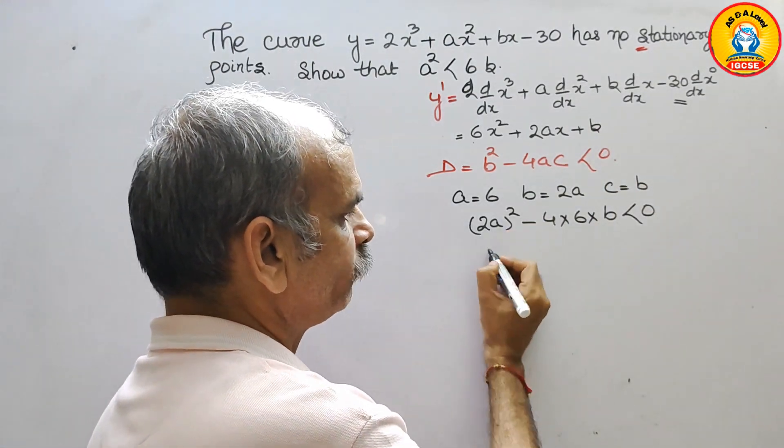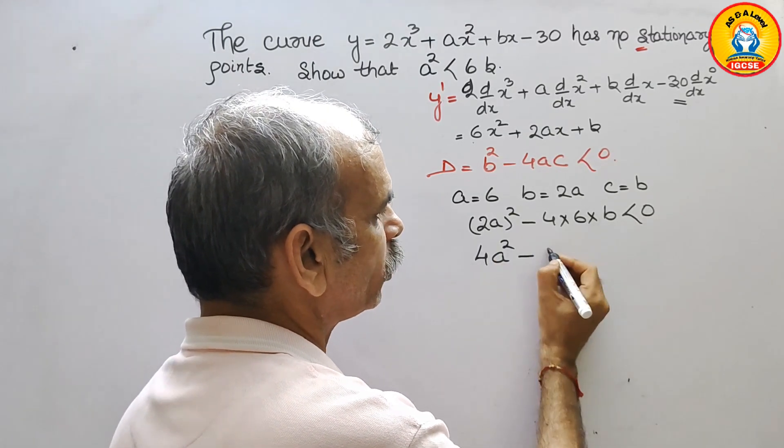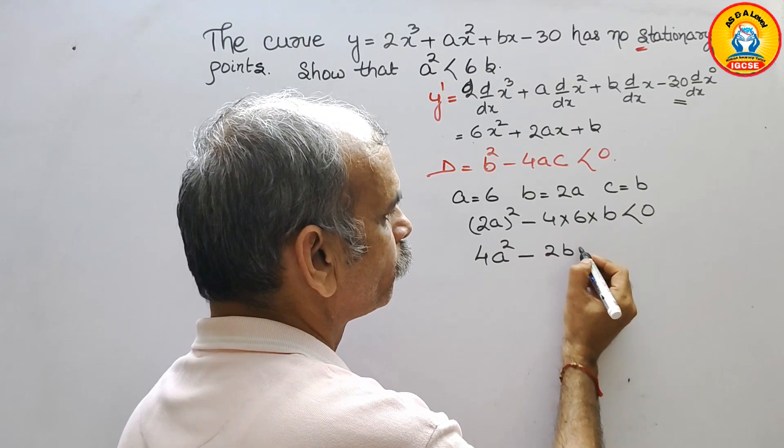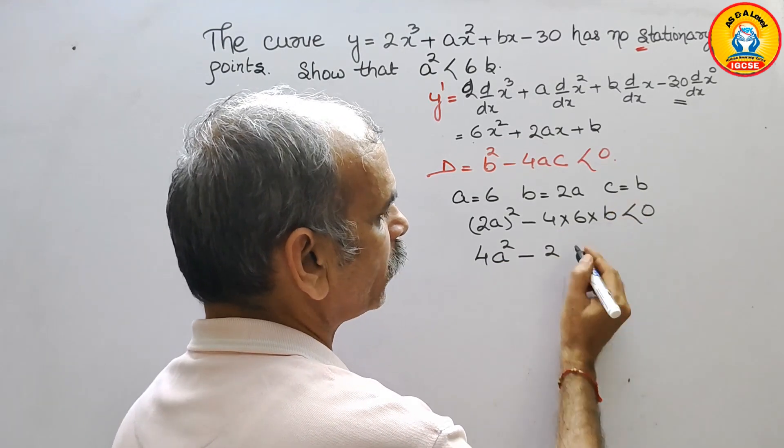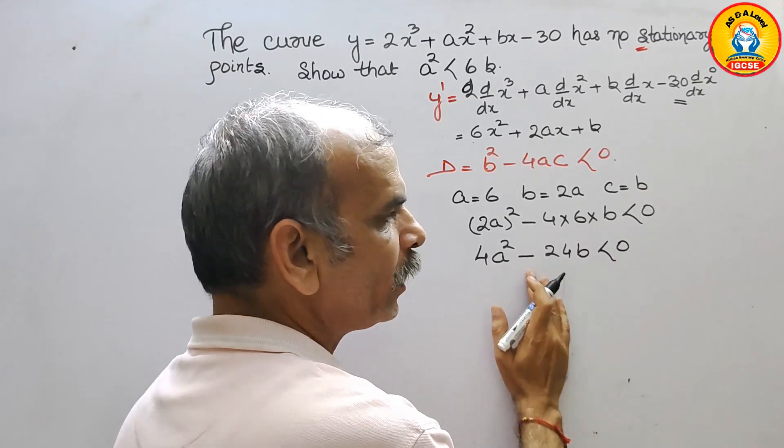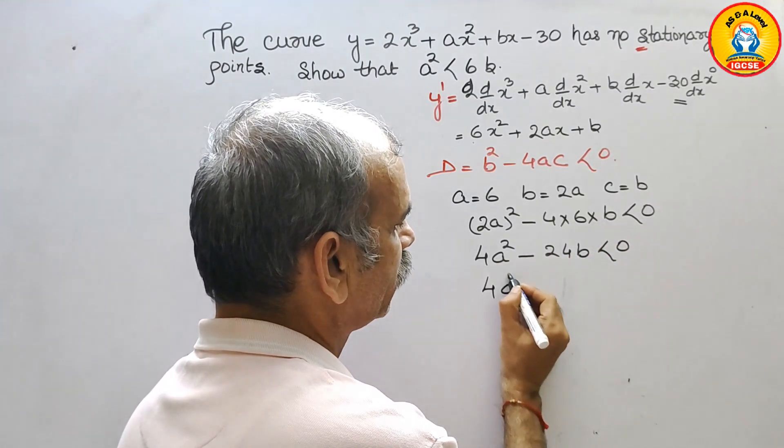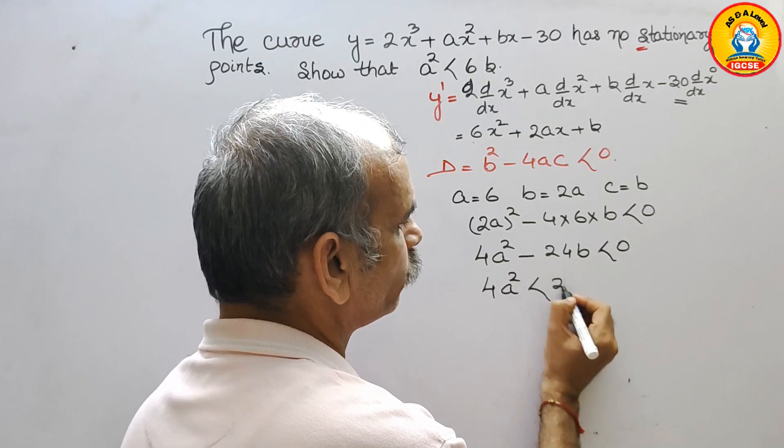Now we will get 4a² minus 24b which is less than 0. Bring this 24 to this side. We will get 4a² is less than 24b.